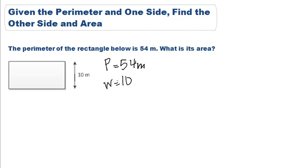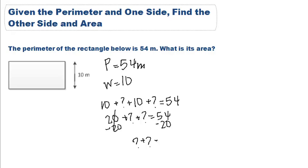So if we know that the perimeter is going to be 10 plus something plus 10 plus something equals 54, we can find our other length. So here we know that 20 plus something plus something equals 54. We can subtract this 20 from both sides and we know that something plus something equals 34.